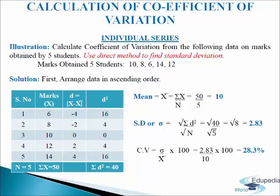For the solution we will make a table of four columns. In the first column we will write serial numbers 1 through 5, giving n equals 5. In the second column we will write marks, denoted by letter X, arranged in ascending order: 6, 8, 10, 12 and 14. We will add up the marks and get sigma X equals 50.